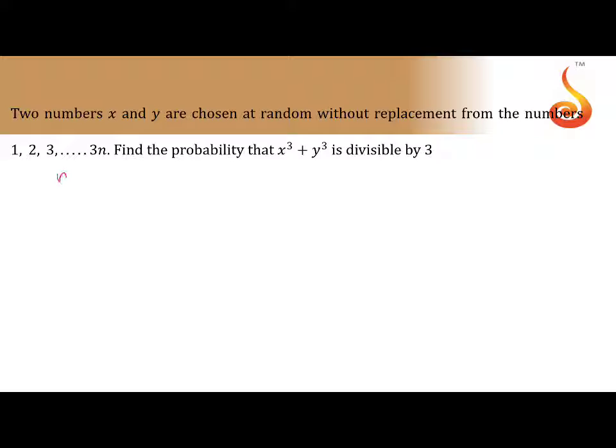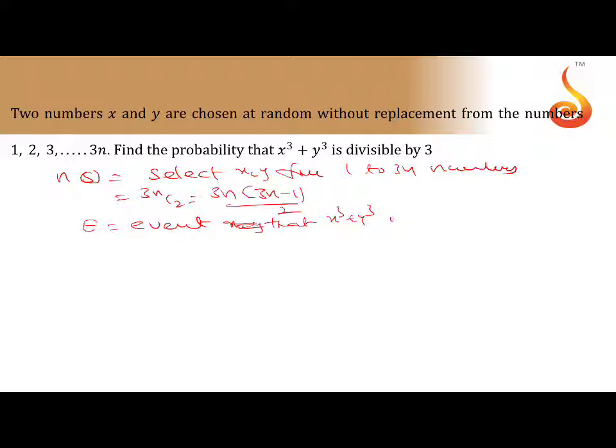Now n of S means select x comma y from 1 to 3n numbers. That can happen 3n choose 2, which is 3n times 3n minus 1 by 2. Now we can take E as the event that x cube plus y cube is divisible by 3. That means we have to prove that x plus y is divisible by 3.